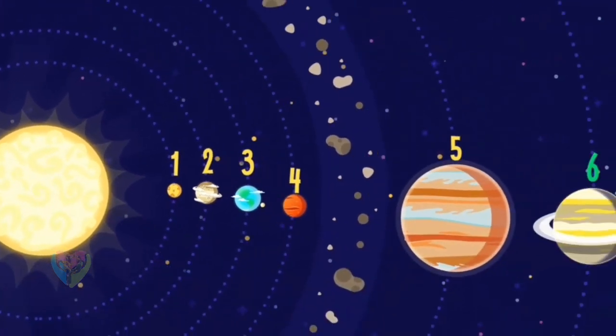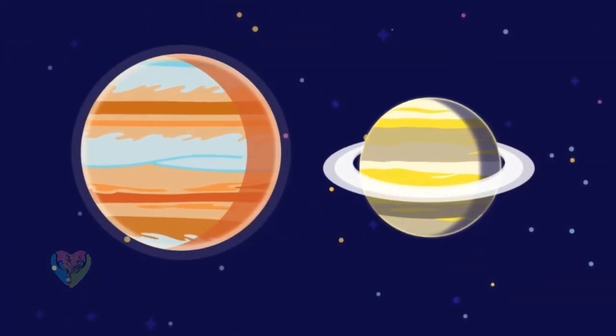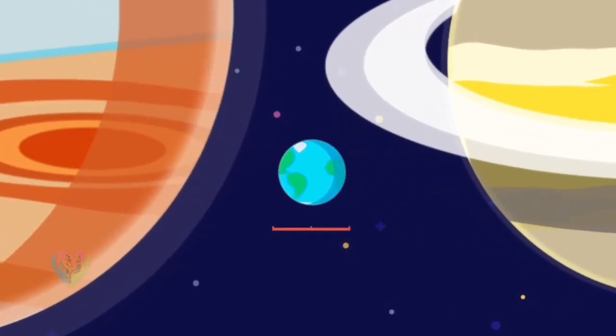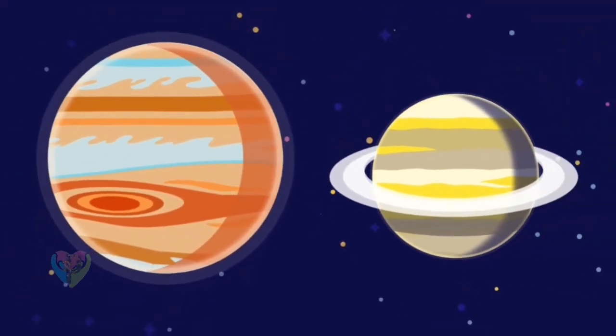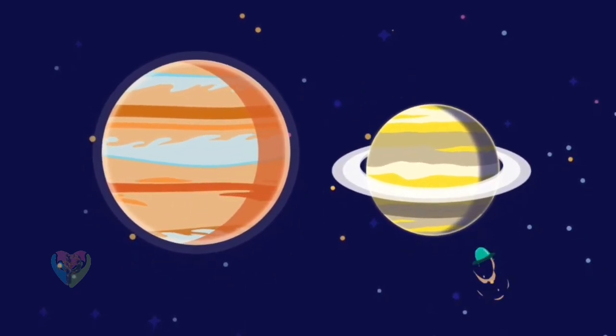Saturn is the sixth planet from the Sun, and the second largest planet in the solar system. It belongs to the so-called gas giants, which consist mainly of various gases and do not have a solid surface.